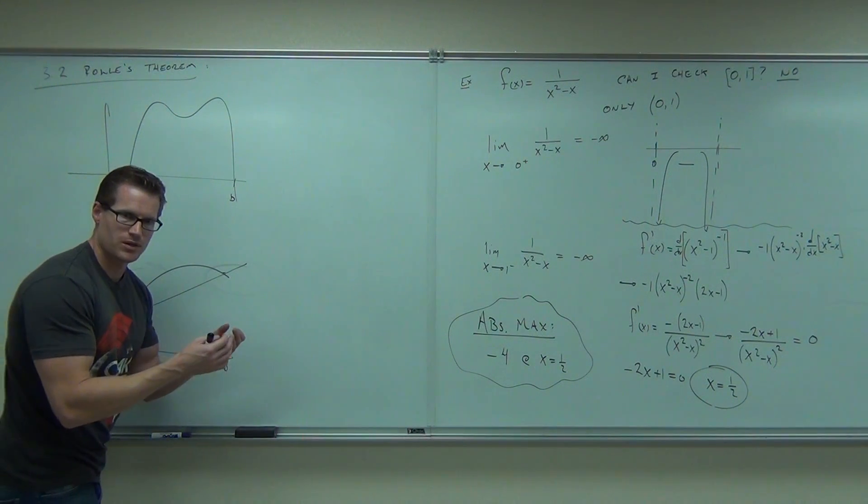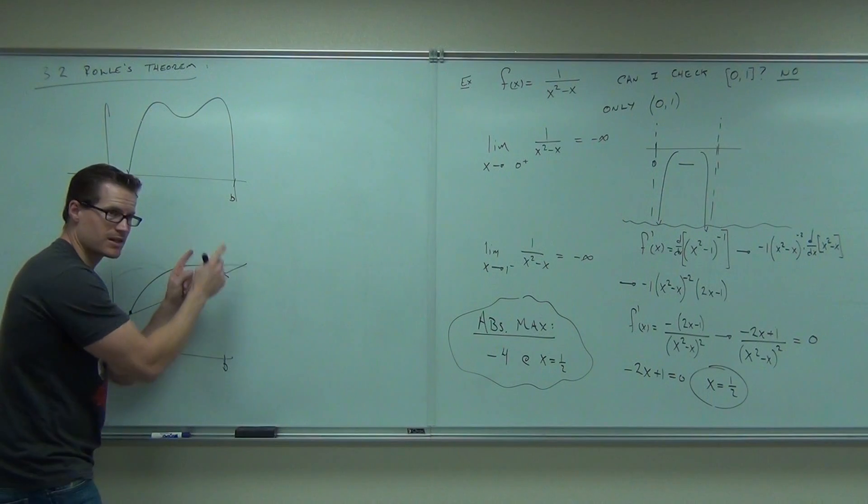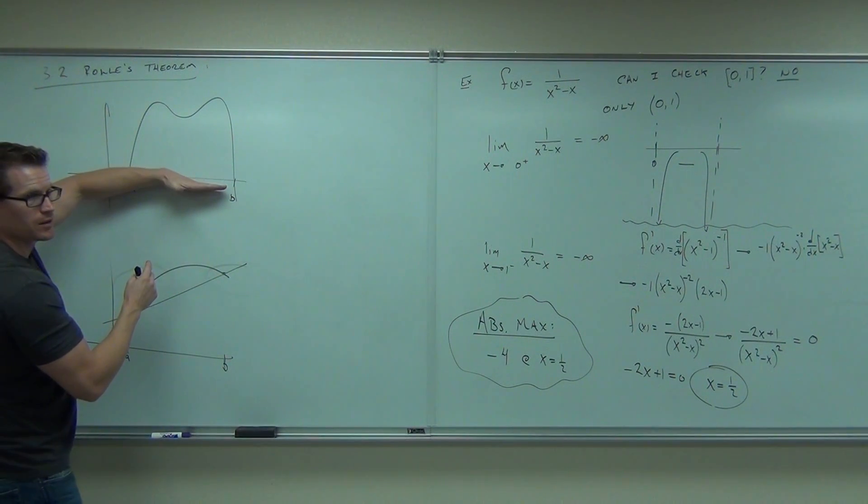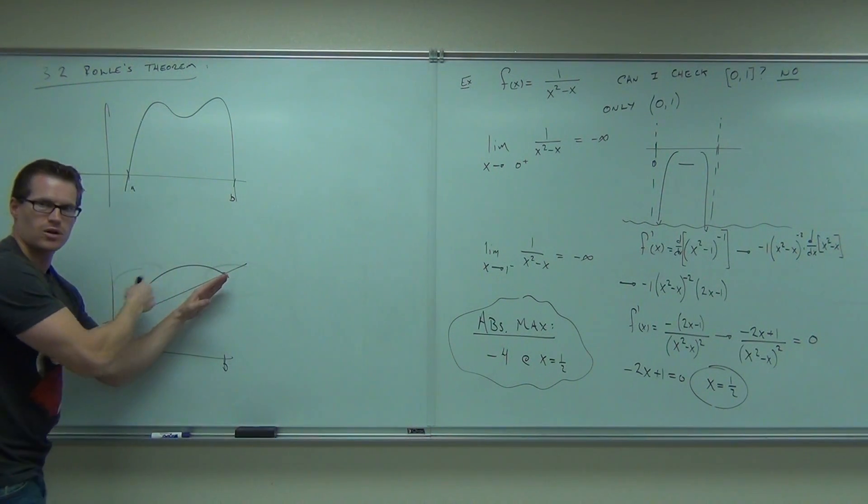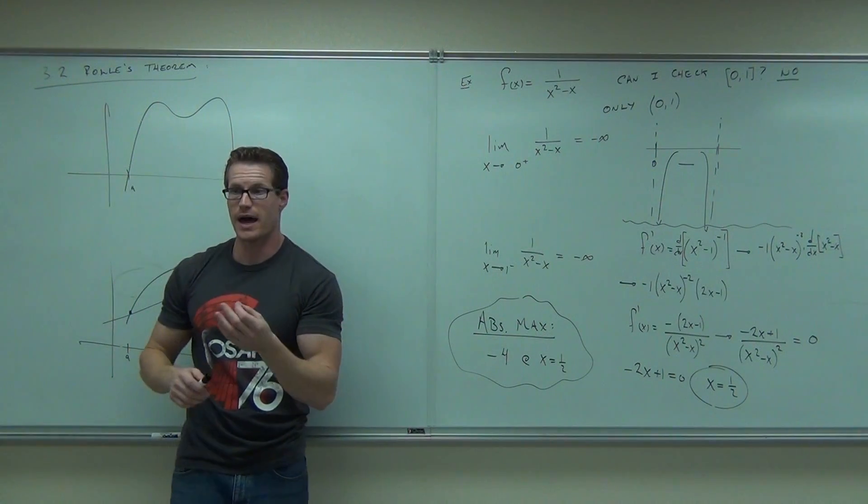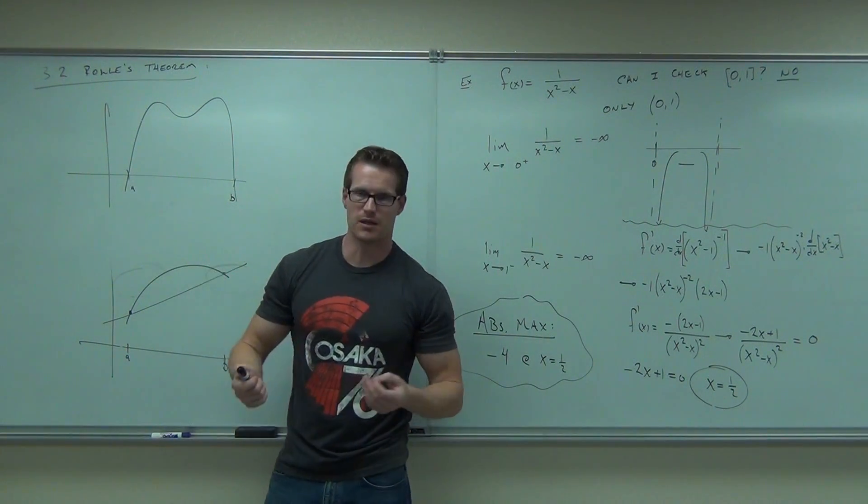Now, make the jump. Do you see that this is exactly the same thing as this? That's a special case. What's the slope of this line? Zero. Somewhere along there, it's going to have a zero slope. You get it? What's the slope of this line? I don't care, but somewhere along here, it's going to have a slope of that exact secant value. That's the Rolle's Theorem and the Mean Value Theorem.